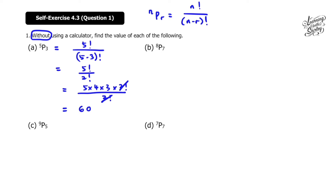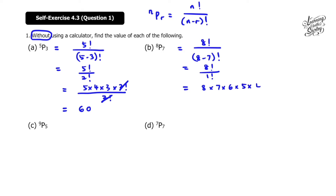Let's solve for B. 8P7 equals 8 factorial over (8 minus 7) factorial. So that equals 8 factorial over 1 factorial, and we know that 1 factorial equals 1. So 8 factorial is 8 times 7 times 6 times 5 times 4 times 3 times 2 times 1, which equals 40,320. That's the answer for B.